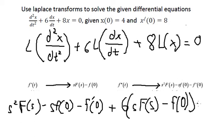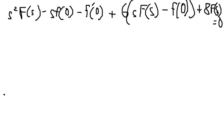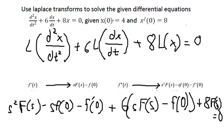This one gives about 8·F(s). We call s(0) that's about f(0), and the first derivative of the function at s(0) is also about f(0) in here. So we put number four and number eight in here.